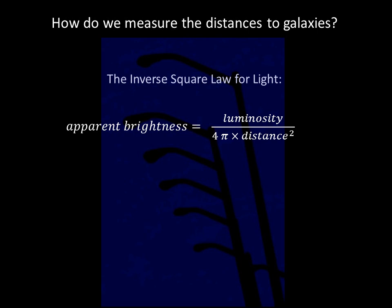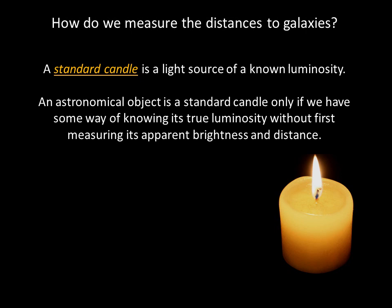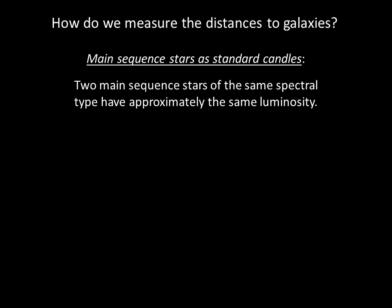We can use this technique to measure the distance to any object with a known luminosity. Astronomers call such objects standard candles. An astronomical object can be a standard candle only if we have some way of knowing its true luminosity. Unfortunately, most astronomical objects are not marked with a wattage label.